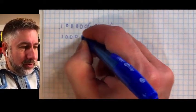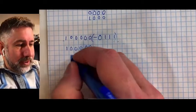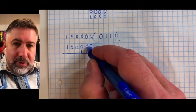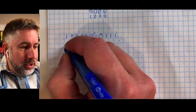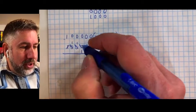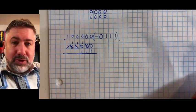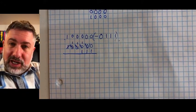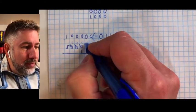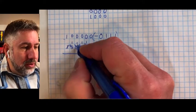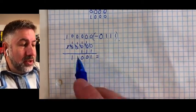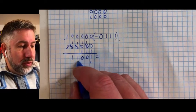We subtract seven from 32. Zero minus one — we can't do it, so we borrow. There's nothing there, and nothing there, and nothing there, so we borrow from the leading bit. Each position becomes two as we propagate the borrow. Then we get: 2 minus 1 is 1, 1 minus 1 is 0, 1 minus 1 is 0, 1 minus 0 is 1, 1 minus 0 is 1, and that leading 1 goes away. So what we get is bits corresponding to 1, 2, 4, 8, and 16.